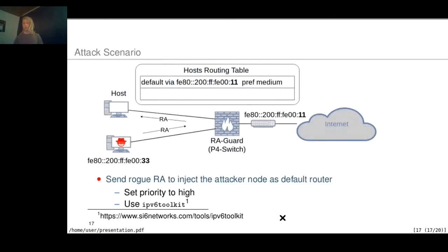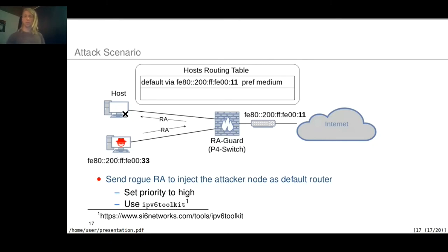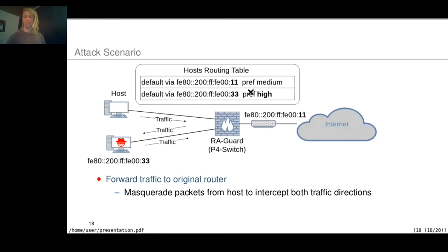Our attack scenario is set up as follows: a host and an attacker machine are connected through a P4 switch to the router. The P4 switch implements our RA-GUARD implementation, and the host has the router's IP as its default router. The attacker machine tries to inject itself into the routing table of the host by sending a malicious router advertisement packet with priority set to high. If the attack succeeds, the routing table of the host is altered, the attacker becomes the default router, and the host redirects its traffic through the attacker machine, allowing the attacker to masquerade packets and intercept both traffic directions.